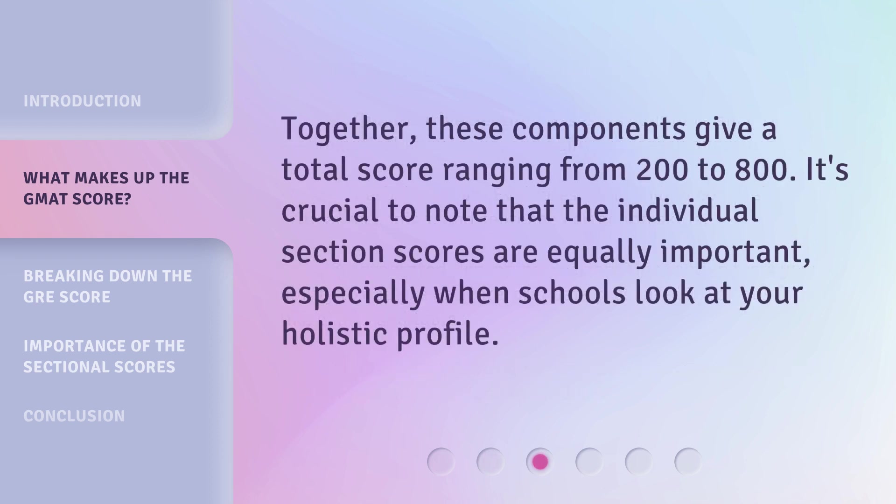Together, these components give a total score ranging from 200 to 800. It's crucial to note that the individual section scores are equally important, especially when schools look at your holistic profile.